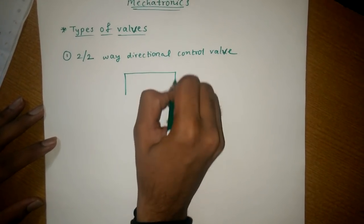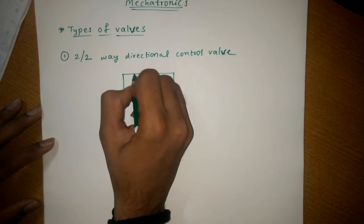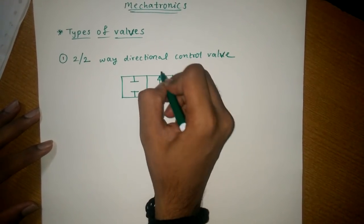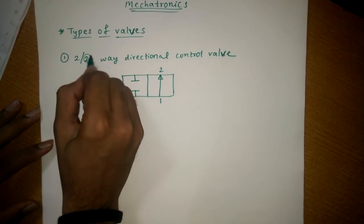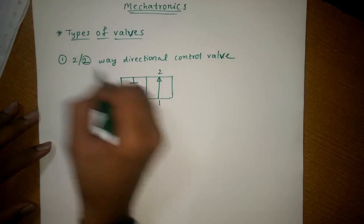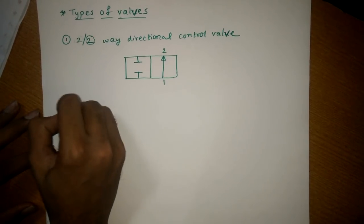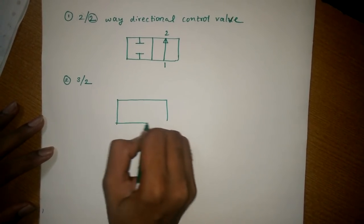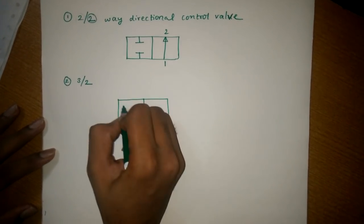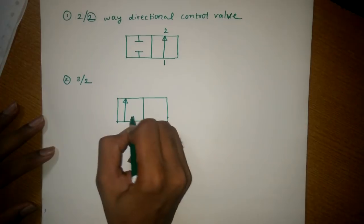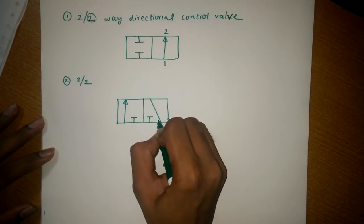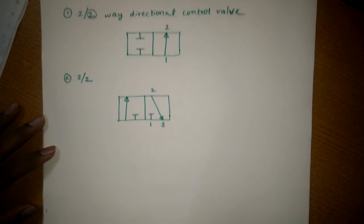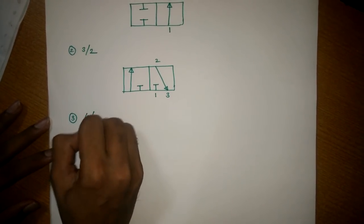The diagram for the 2/2 valve is like this. This '2' means two boxes and this '2' means positions one and two. The second is the 3/2 valve — the diagram is like this, with positions one, two, and three. Third is the 4/2 valve.